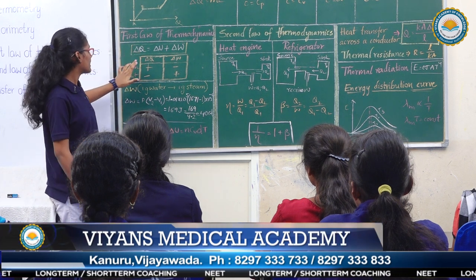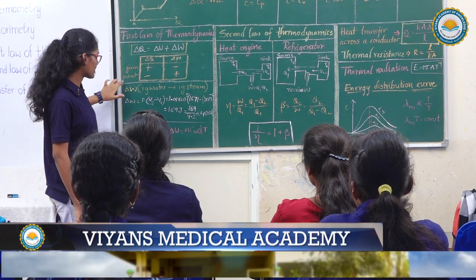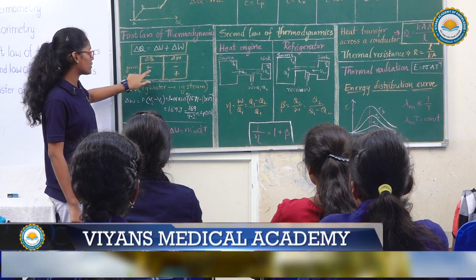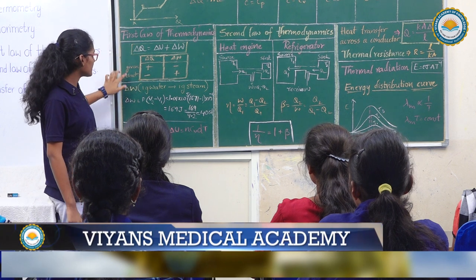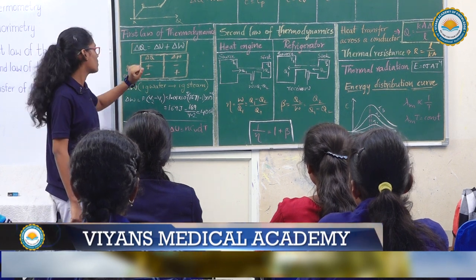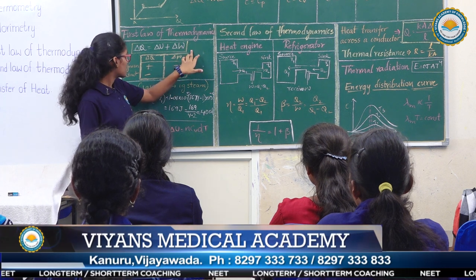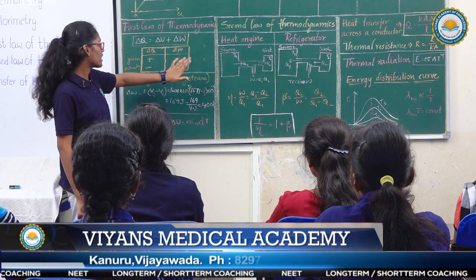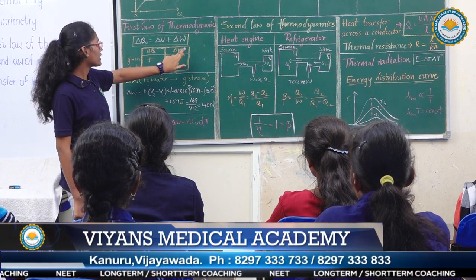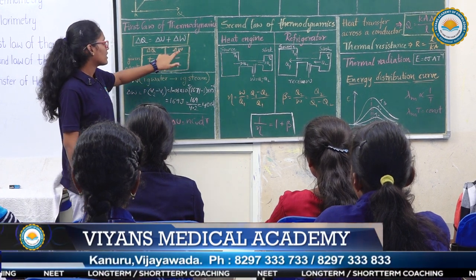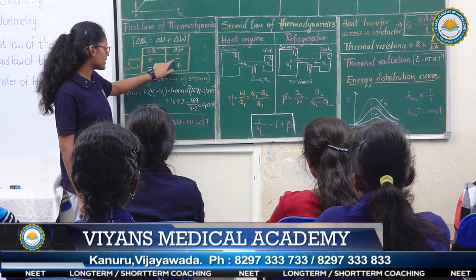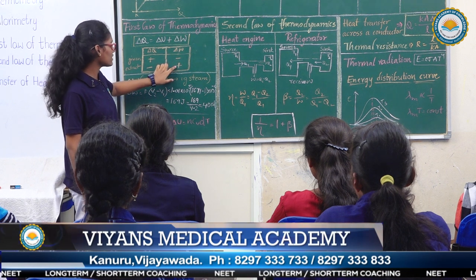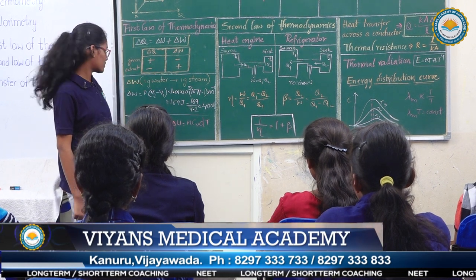Here, delta Q is the heat given to or extracted from the system. When heat is given to the system, delta Q is taken as positive; when heat is extracted, delta Q is negative. Delta W is work done by or on the system. When work is done by the system, delta W is taken as negative; when work is done on the system, delta W is taken as positive.